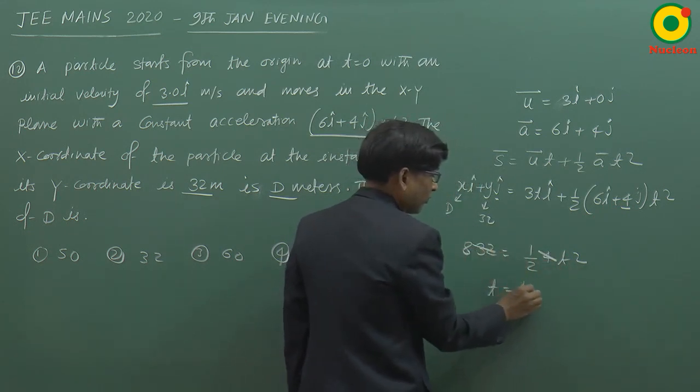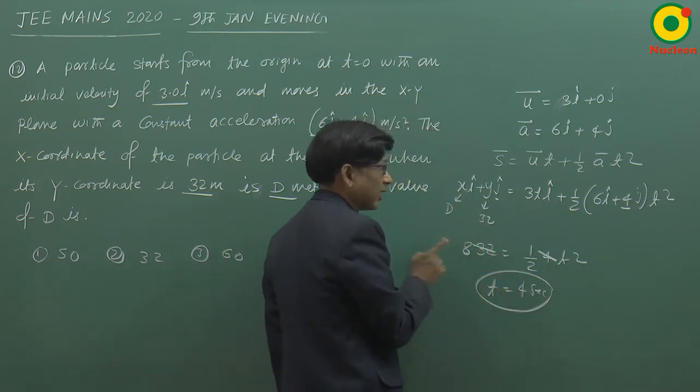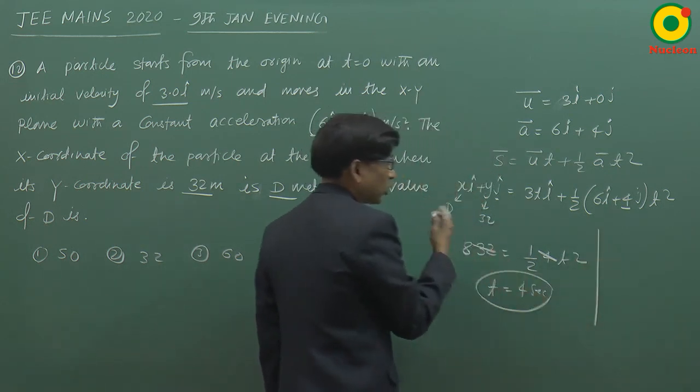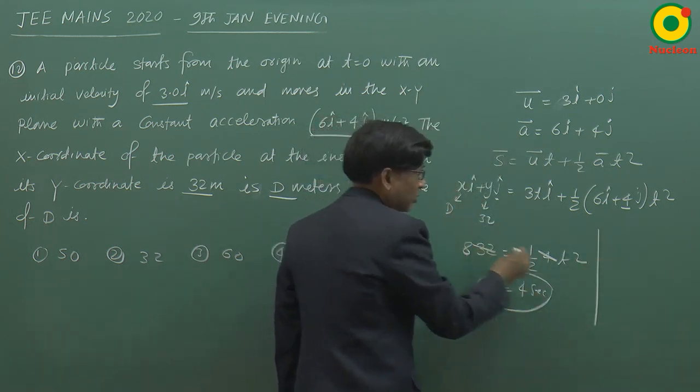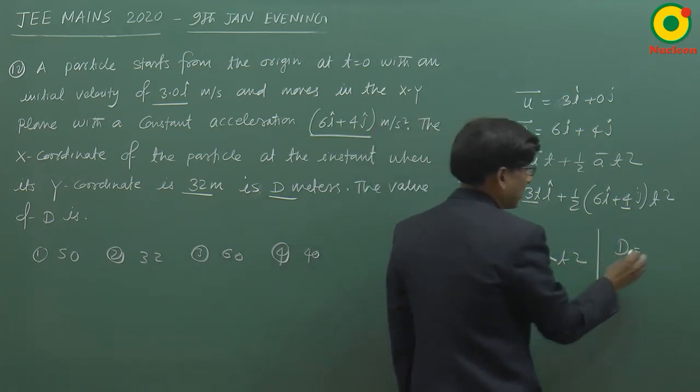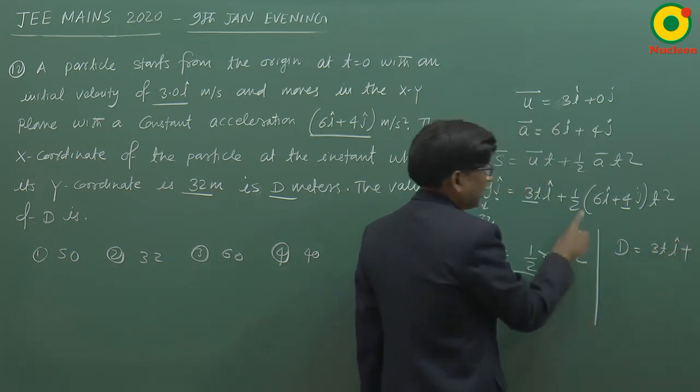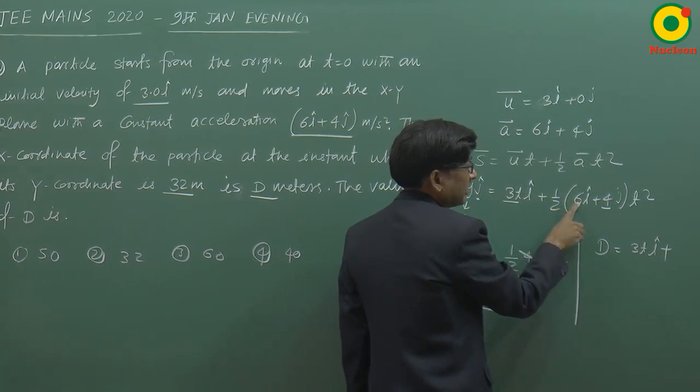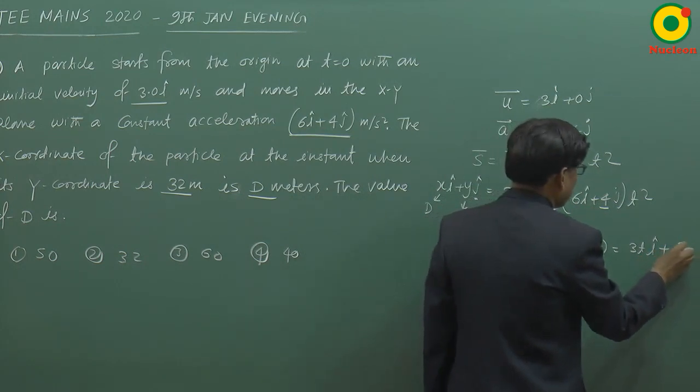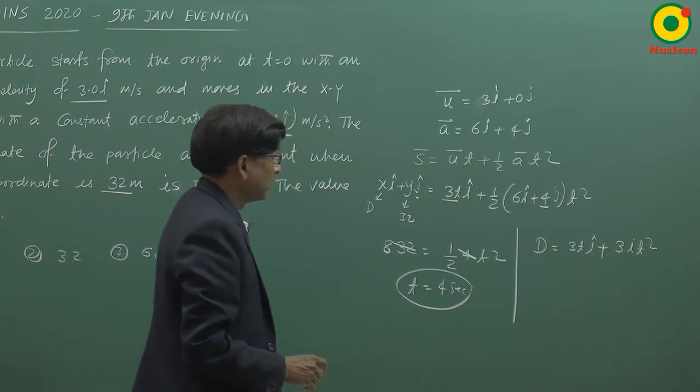Yaani y coordinate 32 kab tha? 4 second par. To is instant par x coordinate kitna hoga woh hamein batana hai. Ab x coordinate compare karte hain. x coordinate idhar jo hai woh hai d, aur idhar hai 3t i cap.